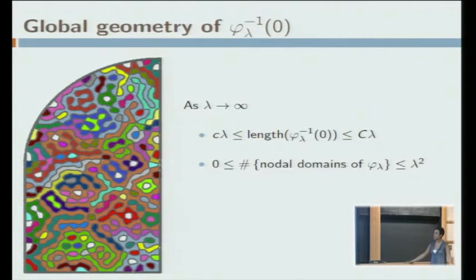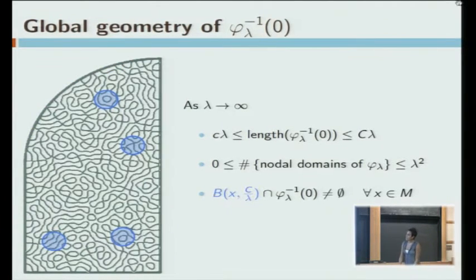You could also ask how spread the zero sets are on the surface. What's known is that there exists a constant C such that if you place a ball of radius C over lambda anywhere in your surface, then that ball is going to intersect the zero set for sure. You could also ask how fat these connected components are. This is a result about the inner radius proved by Mangoubi and by Brüning. On analytic surfaces, the inner radius will decay like C over lambda as lambda goes to infinity, which means you can always place a ball of radius little c over lambda in each of your nodal domains.